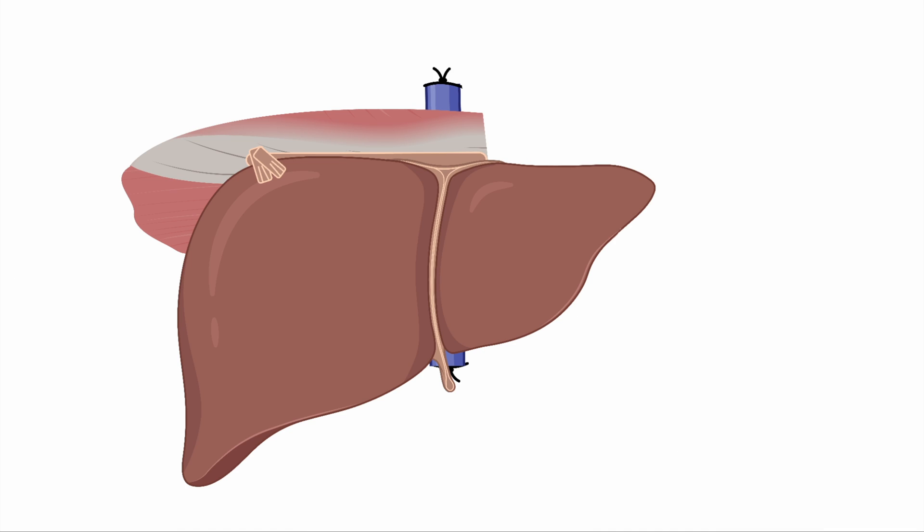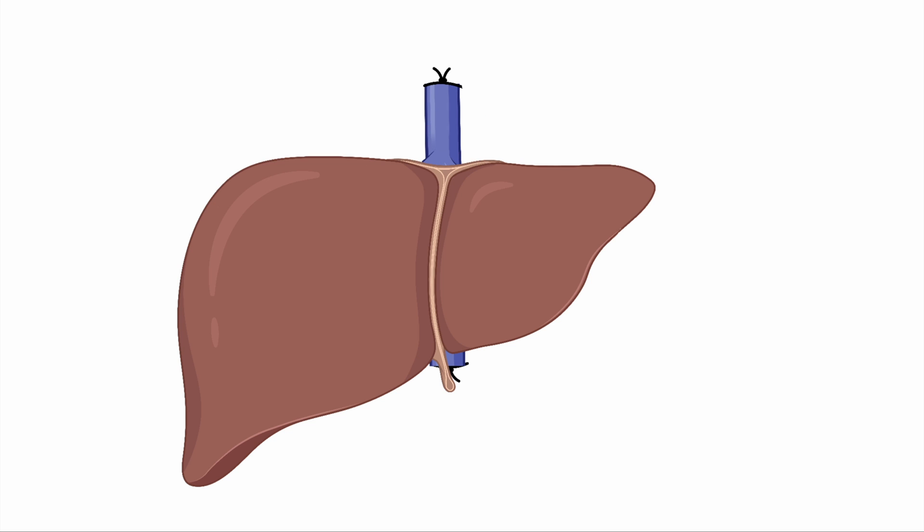On a back bench you will then further prepare the donor graft. The first thing you will need to do is strip the diaphragm from the liver. In some cases the caudate lobe may also need to be removed in order to fully expose the retrohepatic cava. Further, the suprahepatic cava is sewn closed. Your graft is now ready for implantation.